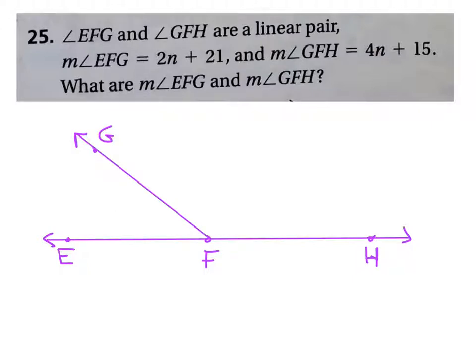Now, we know that linear pairs sum to 180 degrees. So we can then say, if that's true, then the measure of angle EFG, 2N plus 21, added to the measure of angle GFH, 4N plus 15, equals 180.